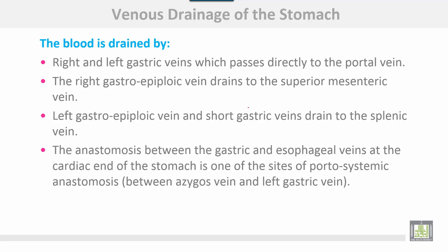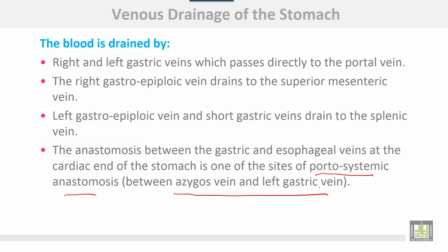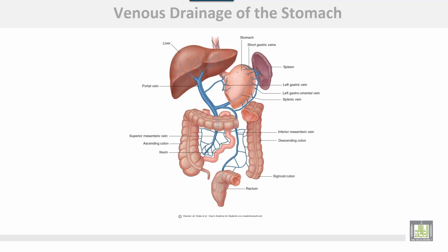Venous drainage: blood is drained by the right and left gastric veins, which pass directly to the portal vein. The right gastro-epiploic vein drains to the superior mesenteric vein. The left gastro-epiploic vein and short gastric veins drain to the splenic vein. The anastomosis between gastric and esophageal veins at the cardiac end of the stomach is one of the sites of portosystemic anastomosis, between the azygos vein and the left gastric vein.